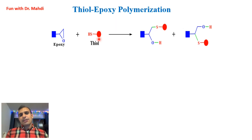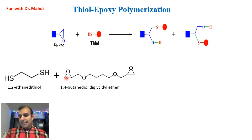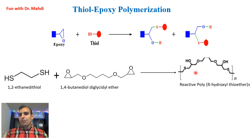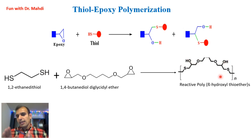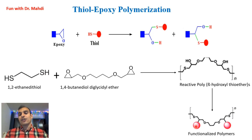Let me give you an example. We have two monomers — on the surface of one monomer we have two thiol groups, and on the surface of the other monomer we have two epoxy groups. After doing the click chemistry reaction, we will have a polymer — we call it reactive poly(β-hydroxyl thiol ether). It's called reactive because we still have some hydroxyl groups on the surface of the polymer that can participate in more reactions. After those further reactions, we call it a functionalized polymer. First we made the polymer using the click reaction, then the polymer participated in additional reactions to give a functionalized polymer.